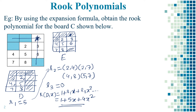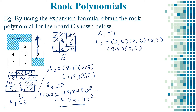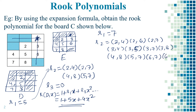Now find the rook polynomial for Board E. The total number of squares is r1 = 7. For r2, the possible positions for two pawns are: (2,4), (2,6), (2,7), (3,5), (3,7), (3,8), (4,8), (5,7), (6,7), (6,8) — counting these gives r2 = 11.